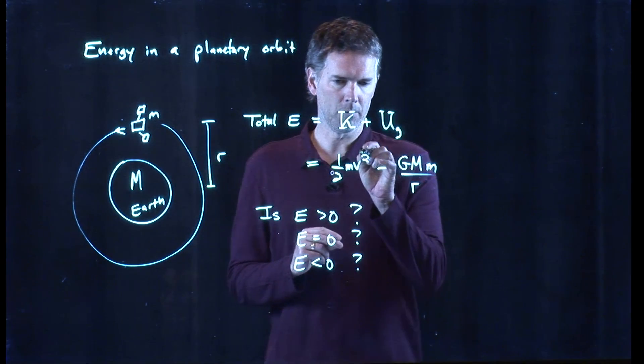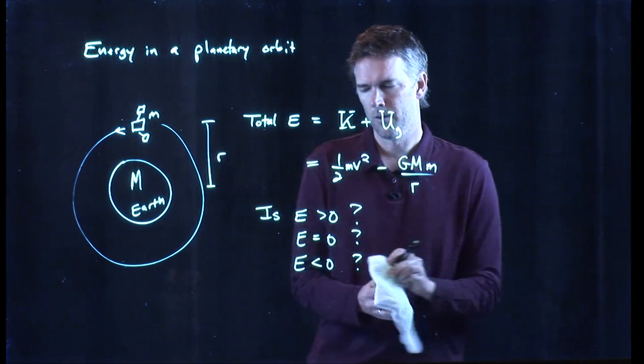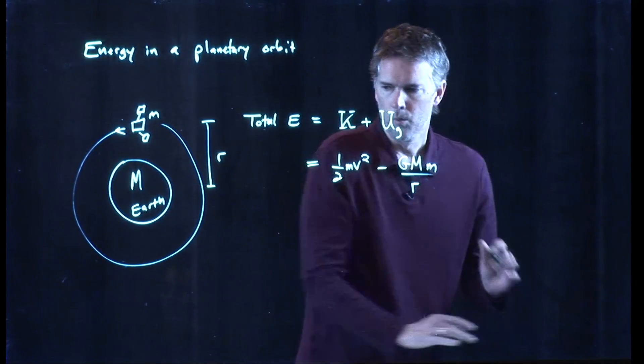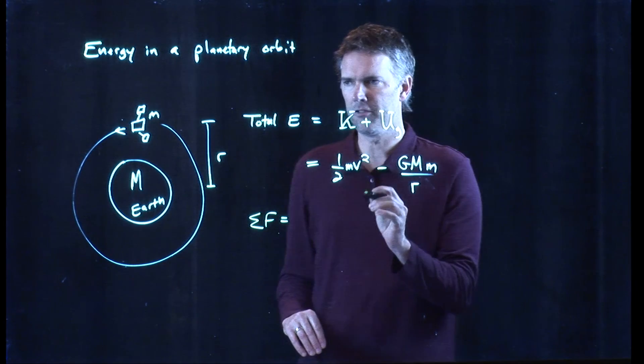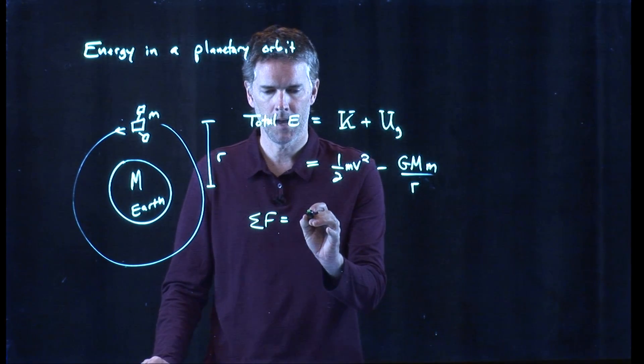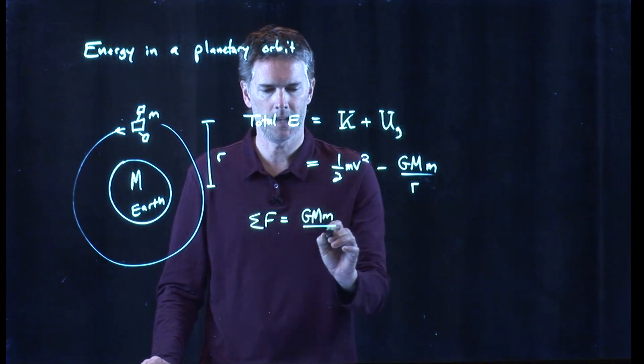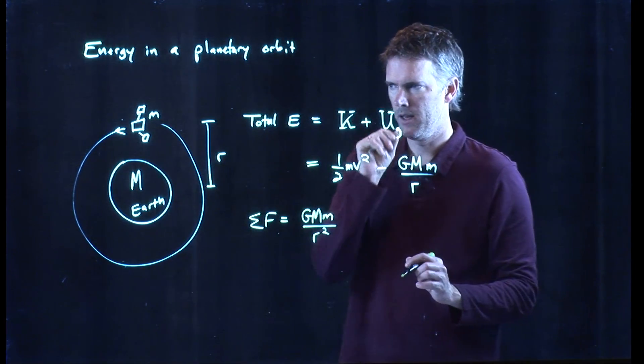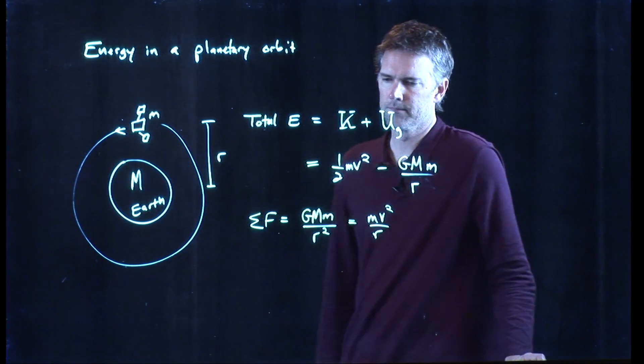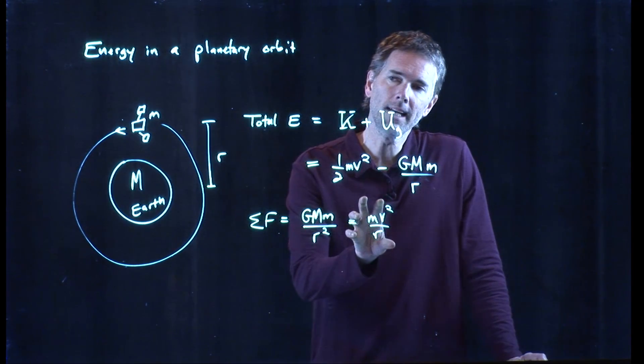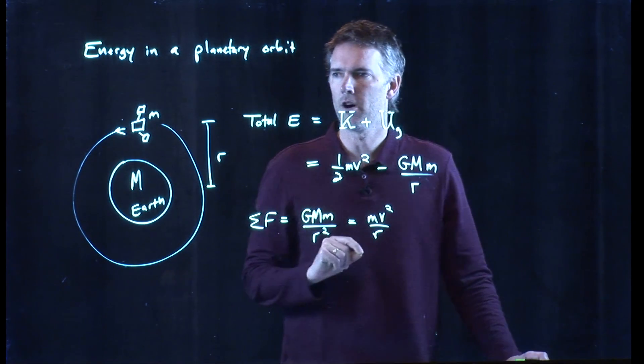What we can do is we can relate this v to some of this stuff over here. How do we do that? Well, what we remember is that if it's moving in a circle, the sum of the forces have to add up to mv squared over r. And there's only one force here. It's G, mass of the earth, mass of the satellite, divided by r squared. That equals mv squared over r. And so it looks like I can relate this mv squared stuff to these other parameters, which maybe we can solve this and plug it back into there.